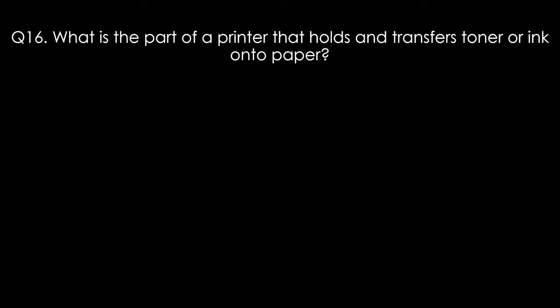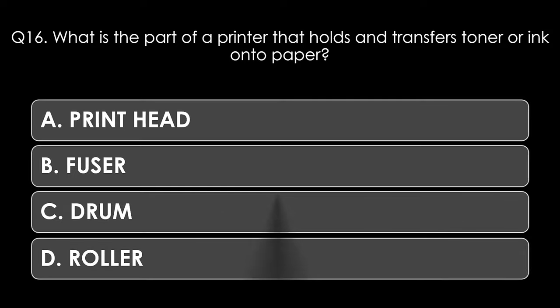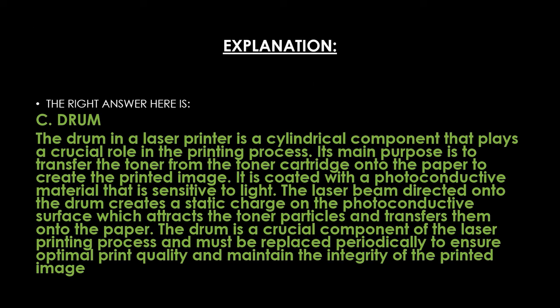Question sixteen. What is the part of a printer that holds and transfers toner or ink onto paper? Options: print head, fuser, drum, or roller. The right answer is drum. The drum in a laser printer is a cylindrical component that transfers toner from the toner cartridge onto the paper. It is coated with a photo-conductive material sensitive to light — a laser beam creates a static charge on the surface which attracts toner particles and transfers them onto the paper. The drum must be replaced periodically to maintain optimal print quality.